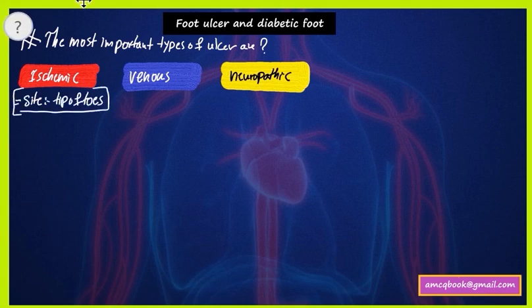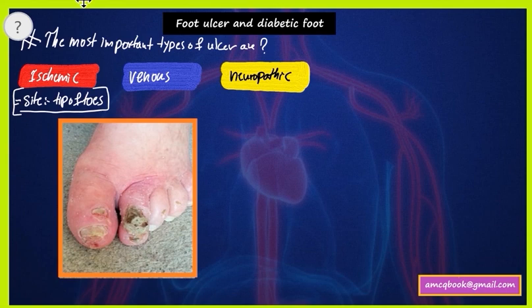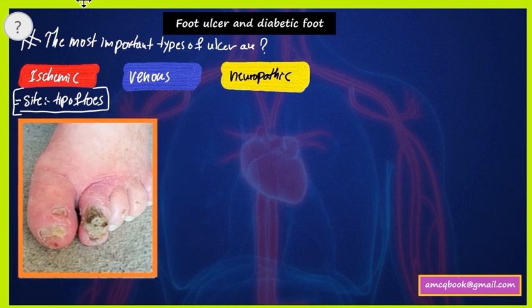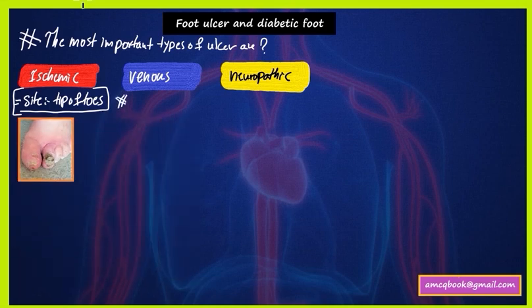For the ischemic ulcer, the site is usually at the tips of the toes, as shown in this picture. Because this is an ischemic ulcer due to ischemia, it usually involves the tip of the toes.